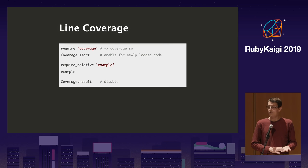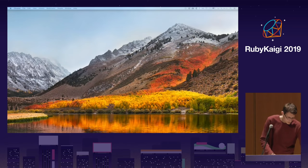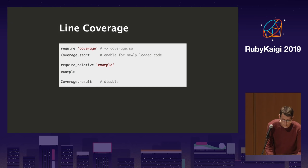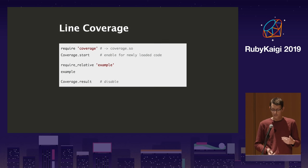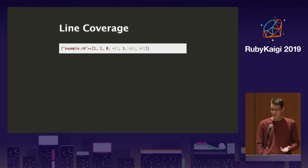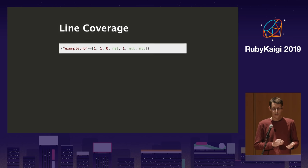The simplest form of coverage is line coverage — that's basically what you get by default when you turn it on. You turn on coverage, require your code, run your code, and then ask for the result. Calling result will also disable coverage recording; you can use peek_result to keep recording after that. The result of line coverage is a big hash of all the files you have loaded and their coverages.